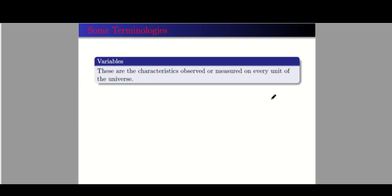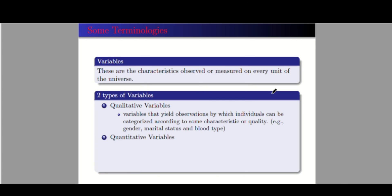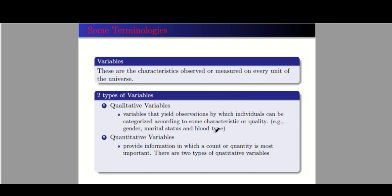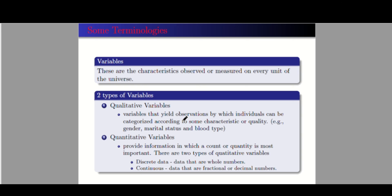Next, we have variables — the characteristics observed or measured on every unit of the universe. We have two types: qualitative and quantitative. Qualitative variables yield observations by which individuals can be categorized according to some characteristic or quality — examples include gender, marital status, blood type, and eye color. Quantitative variables provide information in which count or quantity is most important. There are two types: discrete variables (whole numbers) and continuous variables (fractional or decimal values).